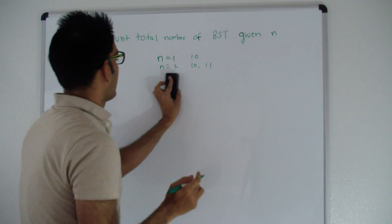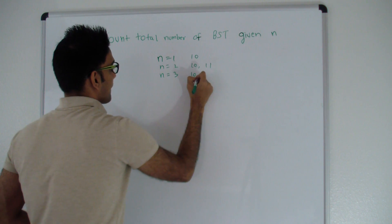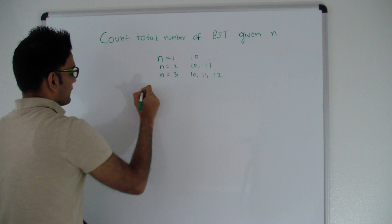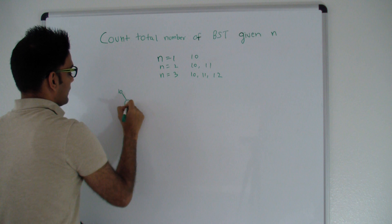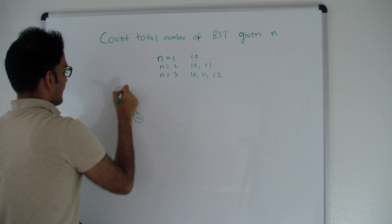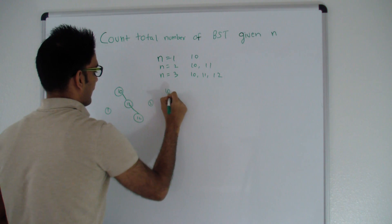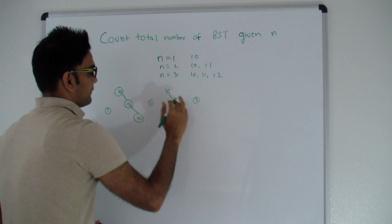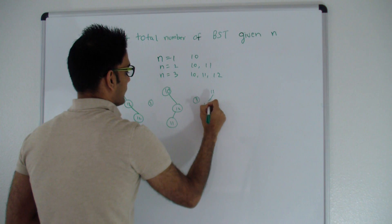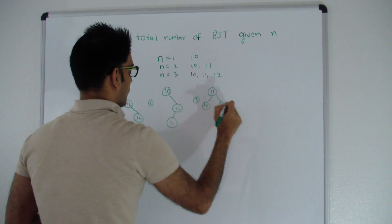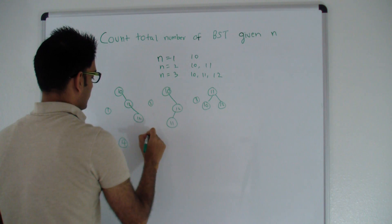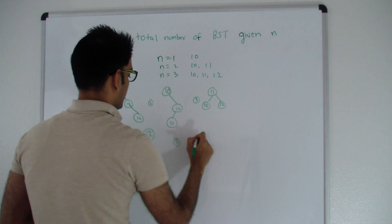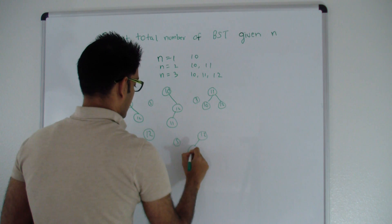When n is 3 and we have keys 10, 11, 12, let's count the trees. With 10 as root: 10→11→12, and 10→12→11. With 11 as root: 11 with 10 and 12. With 12 as root: 12→10→11, and 12→11→10. So if n is 3, we can have five different binary search trees.